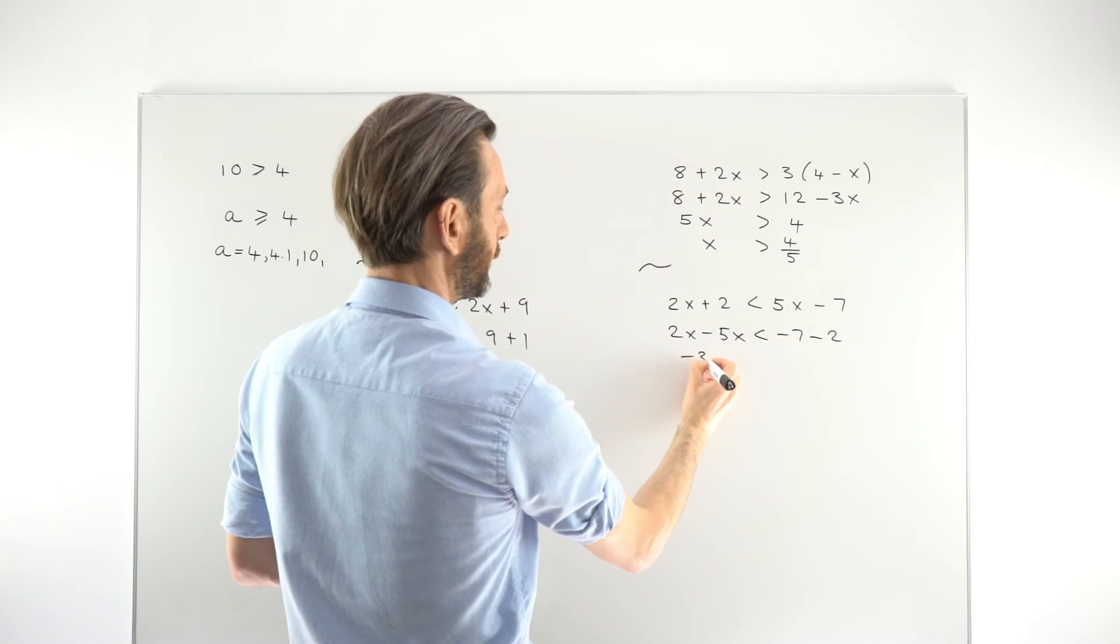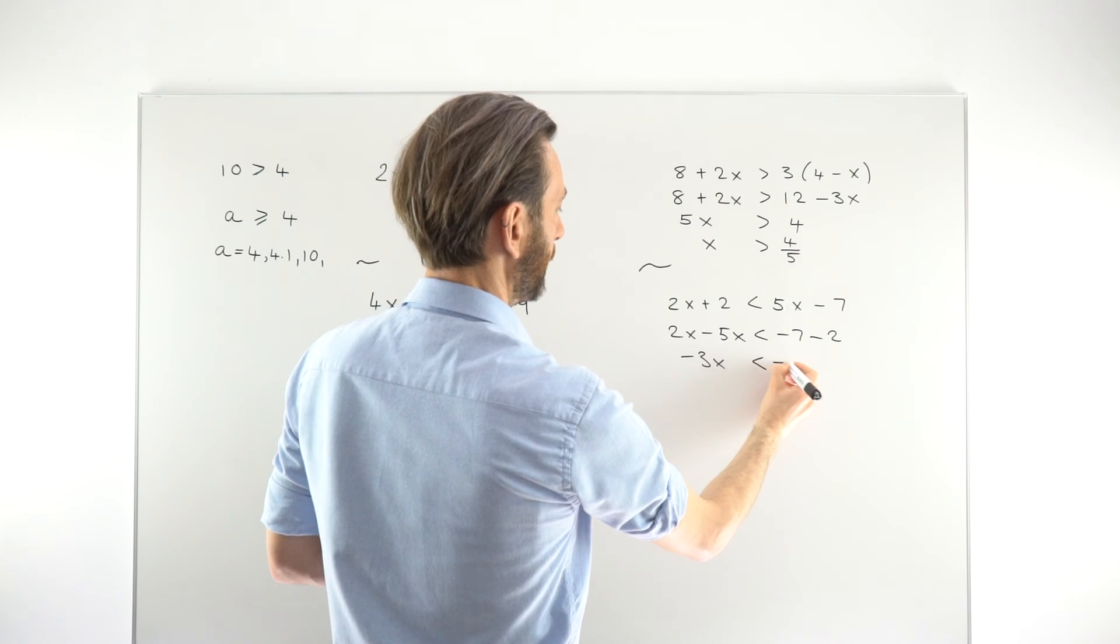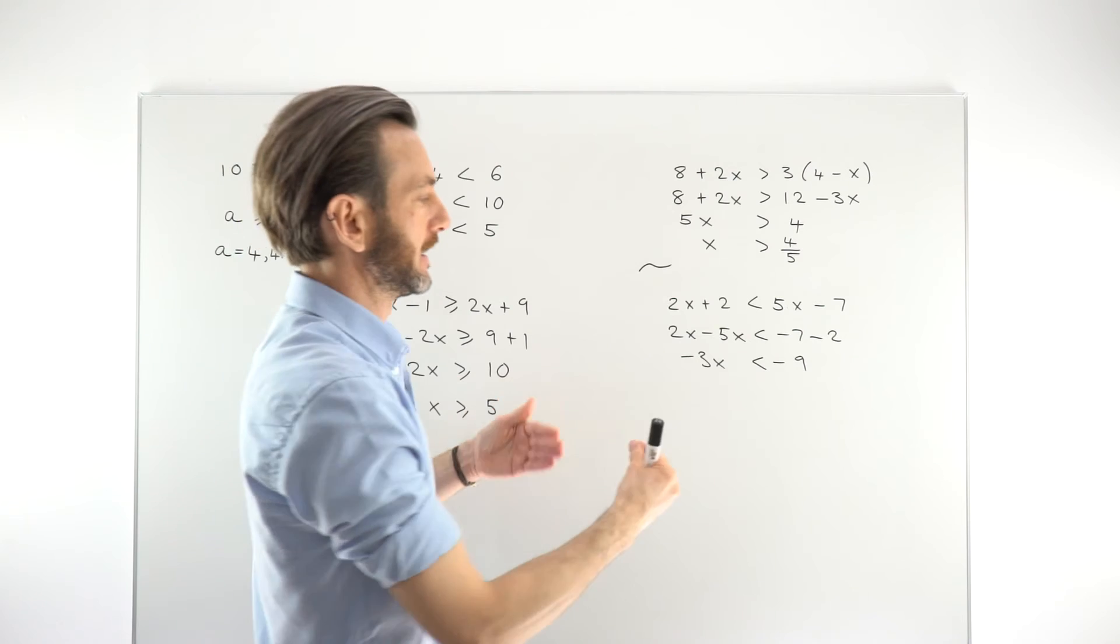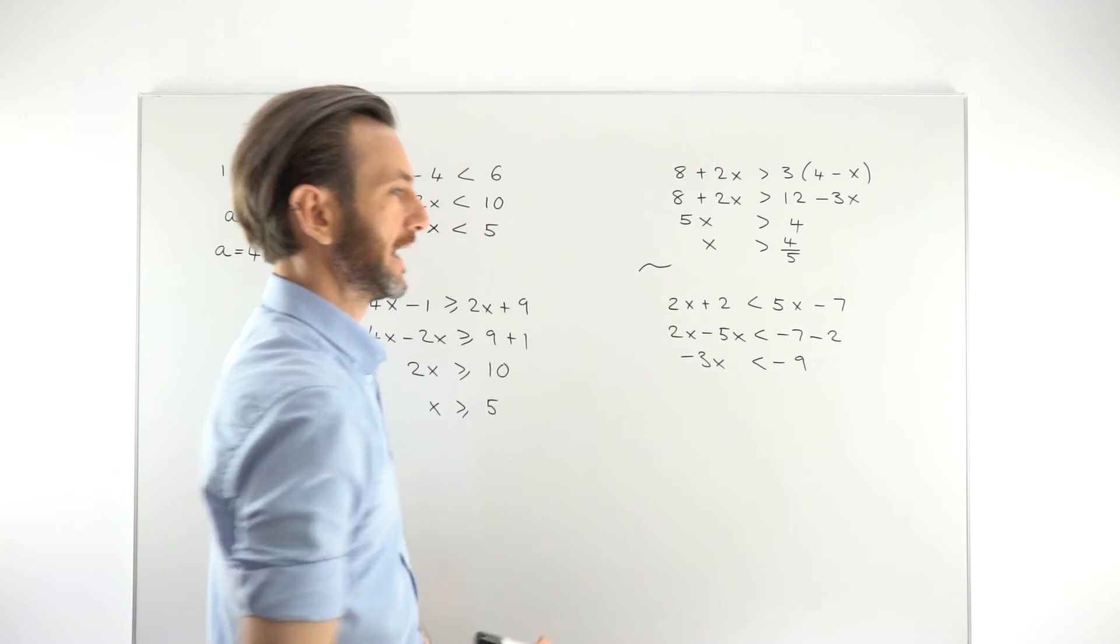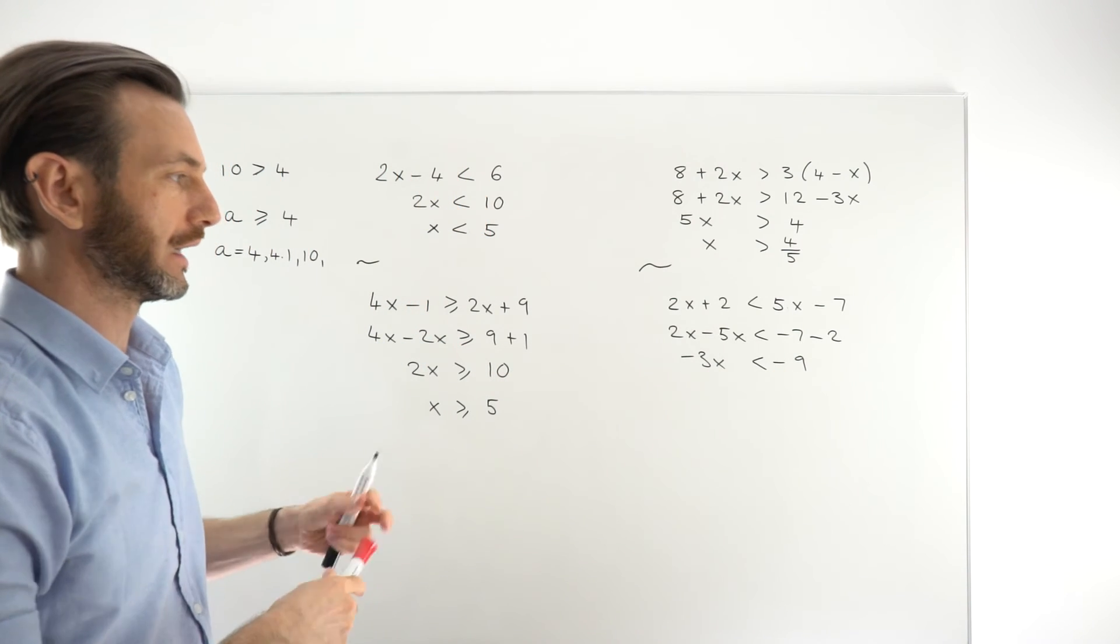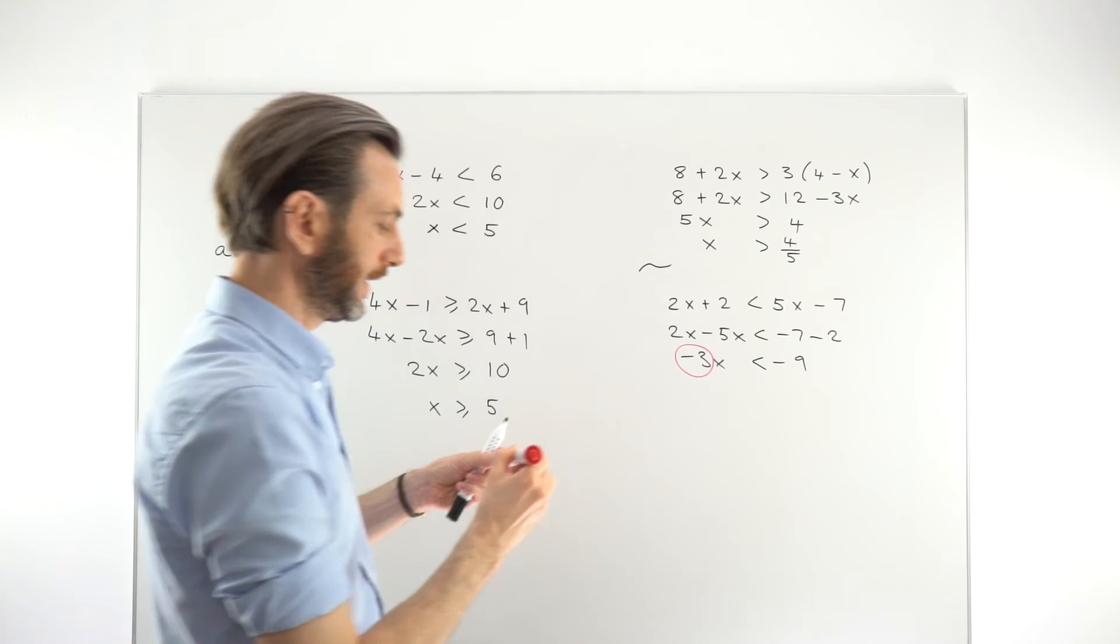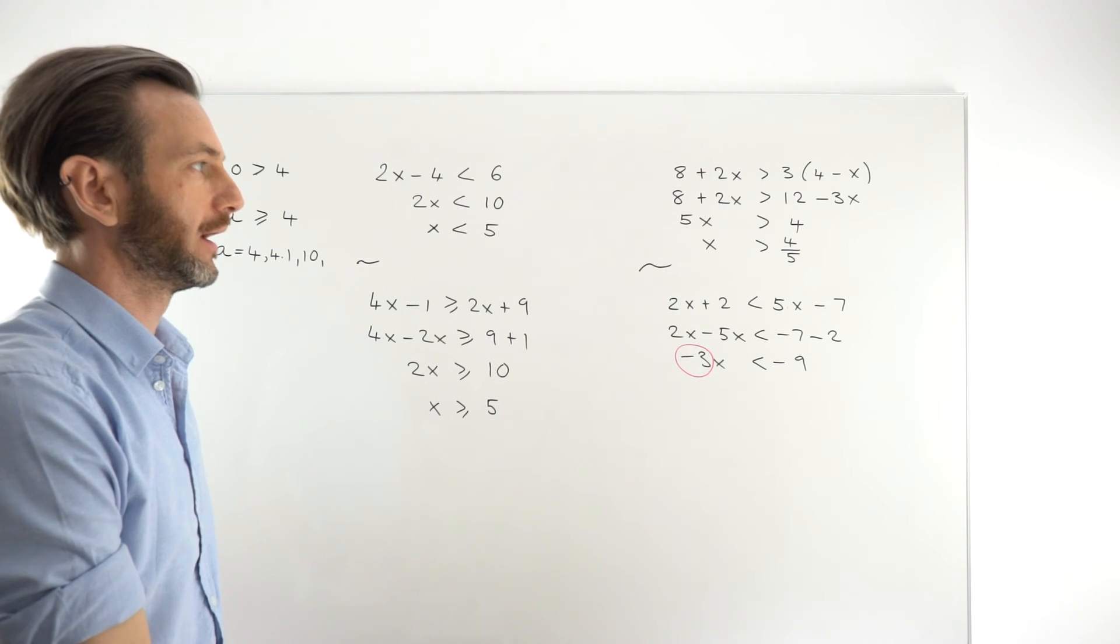Combining those, we get negative 3x, and that's less than minus 9. So this is a different technique to finish this off if you've got a negative number there. It's a little more complicated. There's more to think about. We're just going to leave that one there. We're not going to get into that technique in this class.